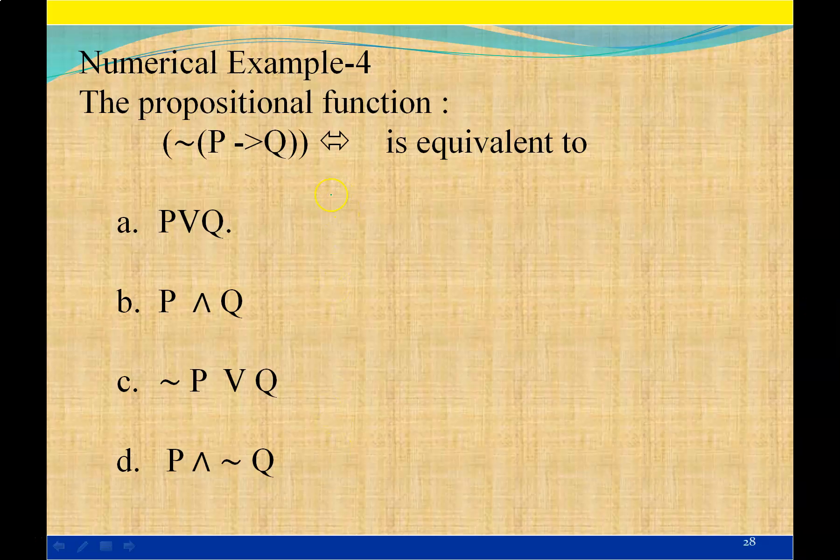In propositional logic, this problem asks what ~(P⇒Q) ⟺ is equivalent to. This is a bi-directional operator.